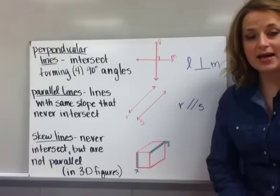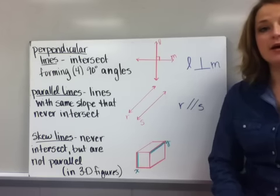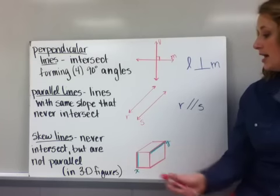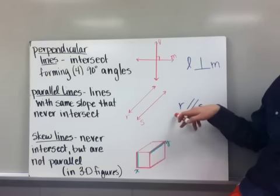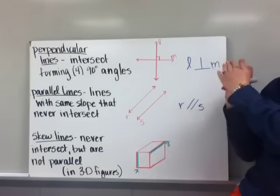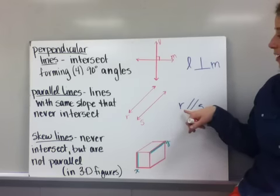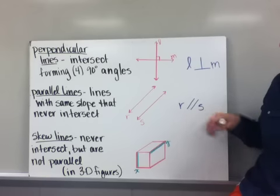You will continue that idea in other geometry classes and in Algebra 1 by noting the slope in an equation and seeing that those equations form parallel lines. So, line R is parallel to line S. It can be drawn with two lines kind of at a diagonal or they could be straight up and down. Either way, that communicates that line R is parallel to line S.